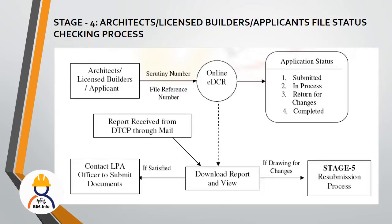This is the third stage. In the fourth stage, the recruitment process is completed. You access DTCP online with your reference number to get the result. You can download it. If approved, you can get the document and start your work. If rejected, you can resubmit it.